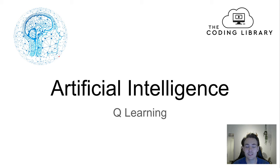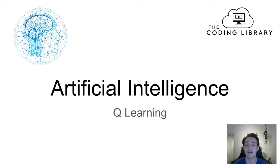Hey guys, welcome to this artificial intelligence tutorial. In this video we're going to talk about Q-learning and see an example of how we can set up a Q-learning environment, apply it in code, and create an example where an agent interacts with the environment and tries to find an end goal in some grid world.